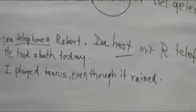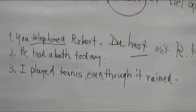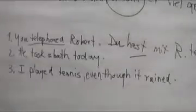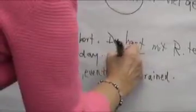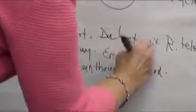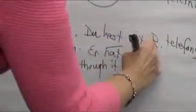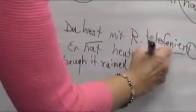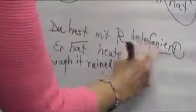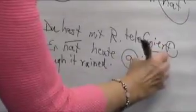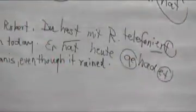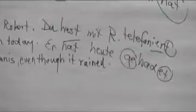Second sentence: 'He took a bath today.' To take a bath is 'baden.' Conjugate haben: 'Er hat heute...' It gets a 'ge-' prefix, then 'bad-' and the '-et' ending: 'Er hat heute gebadet.'